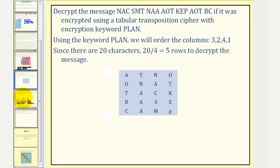As our last example, let's decrypt the message given here if it was encrypted using a tabular transposition cipher with encryption key PLAN. So this tells us that we have four characters per row, which we have here. So we have four columns. Next, we have to determine how many rows we would have based upon the number of characters, which is 20. So we'll take 20, divide by the number of characters per row, which is four. And therefore, we can see we'll have a total of five rows, each containing four characters.